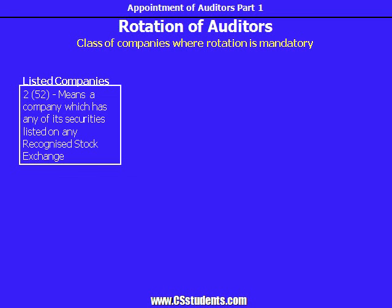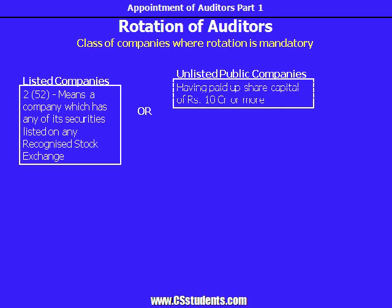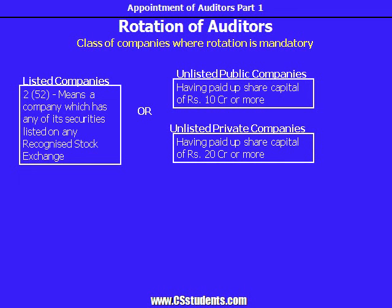The other criteria of companies where rotation is required is given in the Rules — the Companies Audit and Auditors Rules 2014. So in addition to the listed companies, as per Rule 5 of the relevant rules, certain unlisted companies are also subject to the mandatory rotation of auditors. Those companies are: first, all unlisted public companies having paid up share capital of rupees 10 crore or more; second, all private companies having share capital of rupees 20 crore or more.